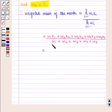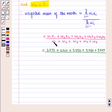w1x1 that is 2 times 70 plus w2x2 that is 2 times 60 plus w3x3 that is 5 times 90 plus w4x4 that is 5 times 50 plus w5x5 that is 3 times 45, whole upon w1 that is 2 plus w2 that is 2 plus w3 5 plus w4 5 plus w5 that is 3.